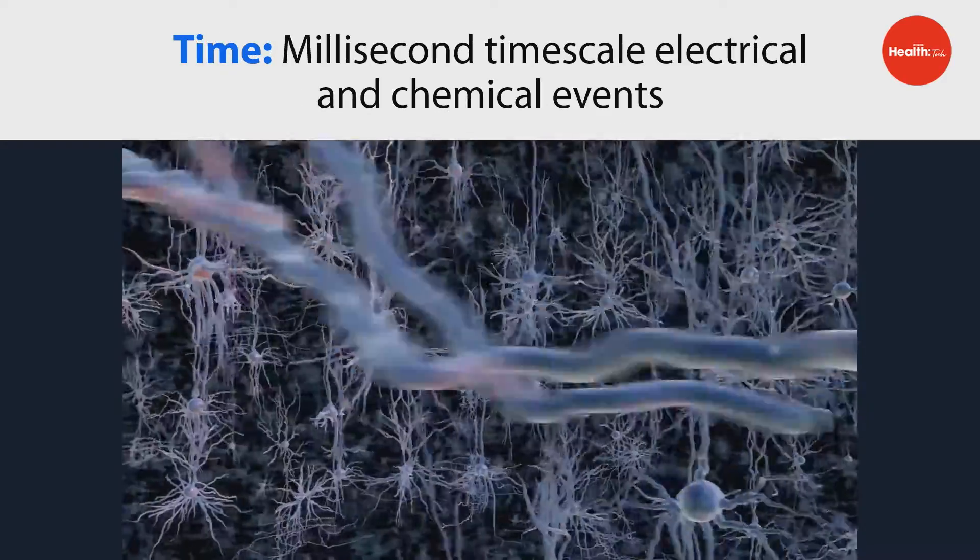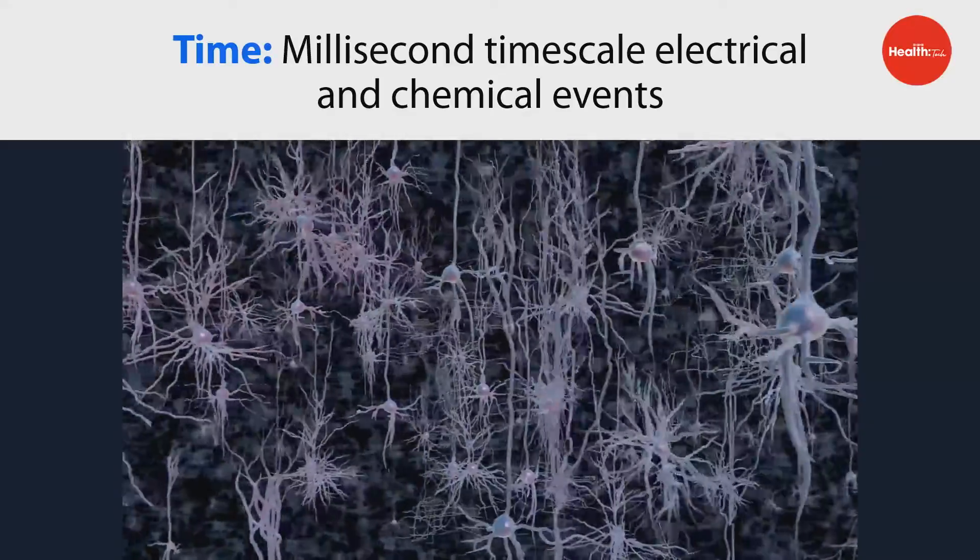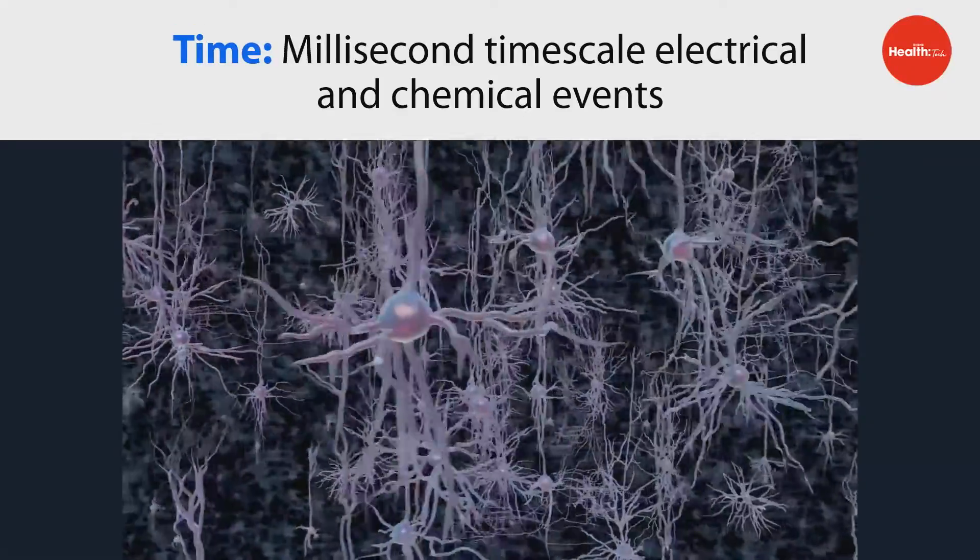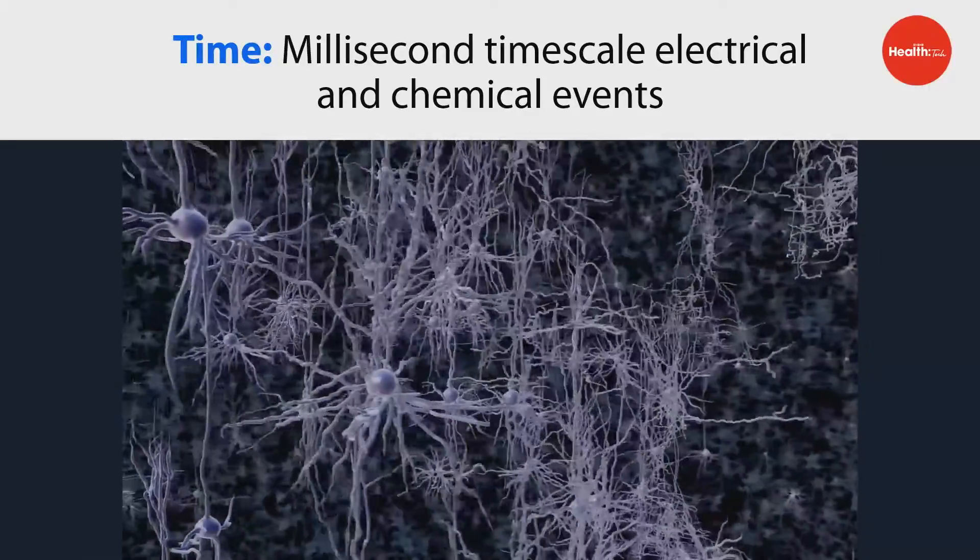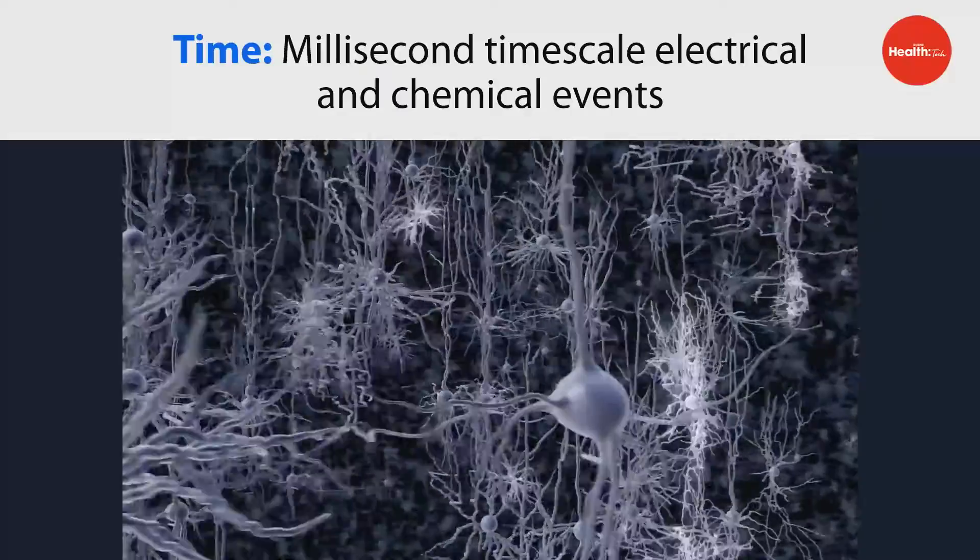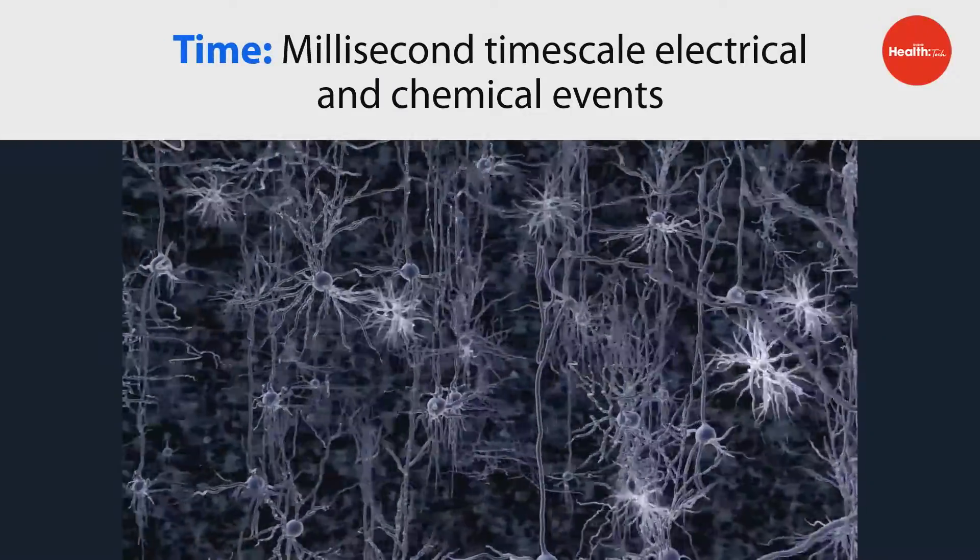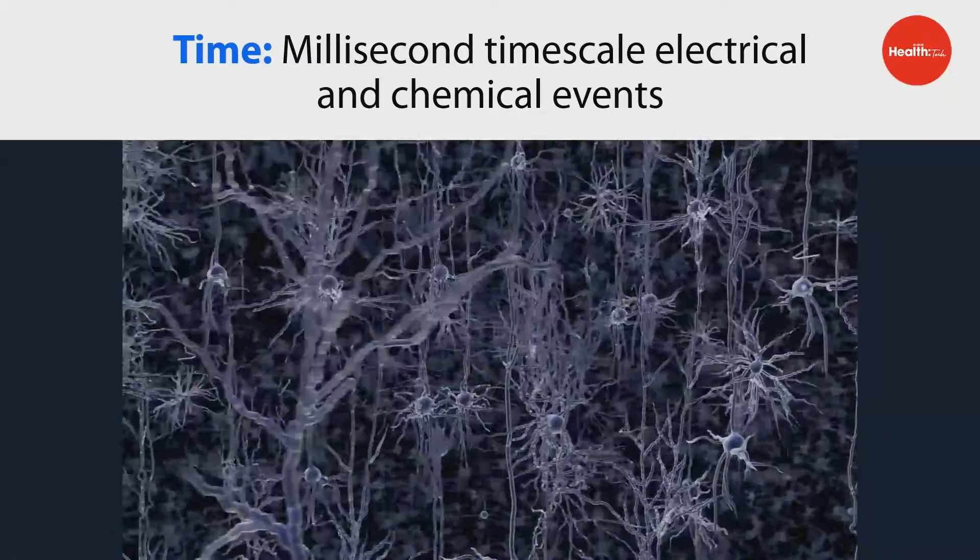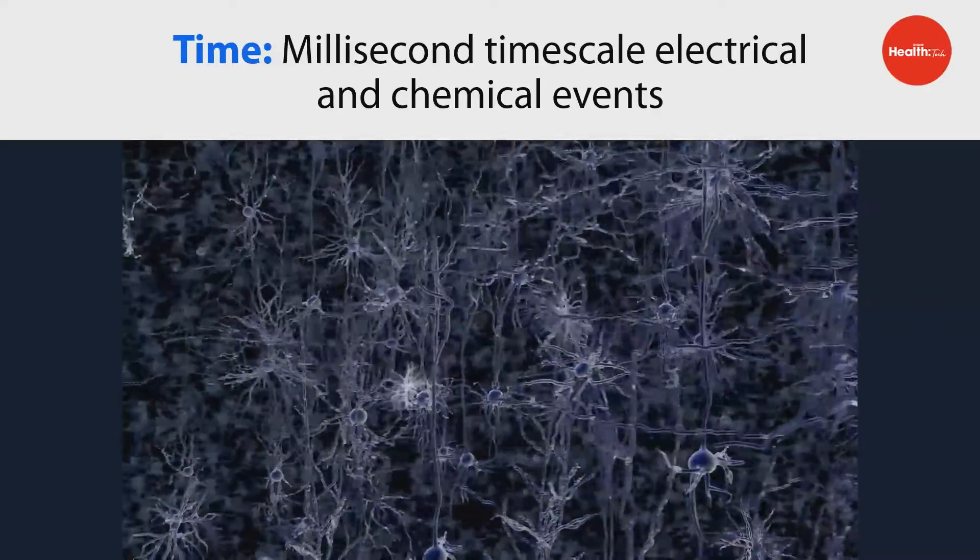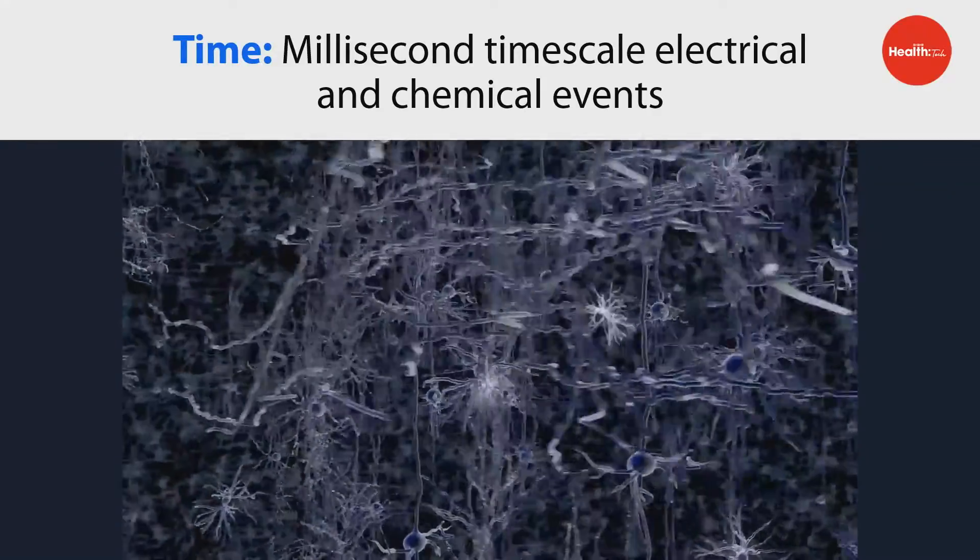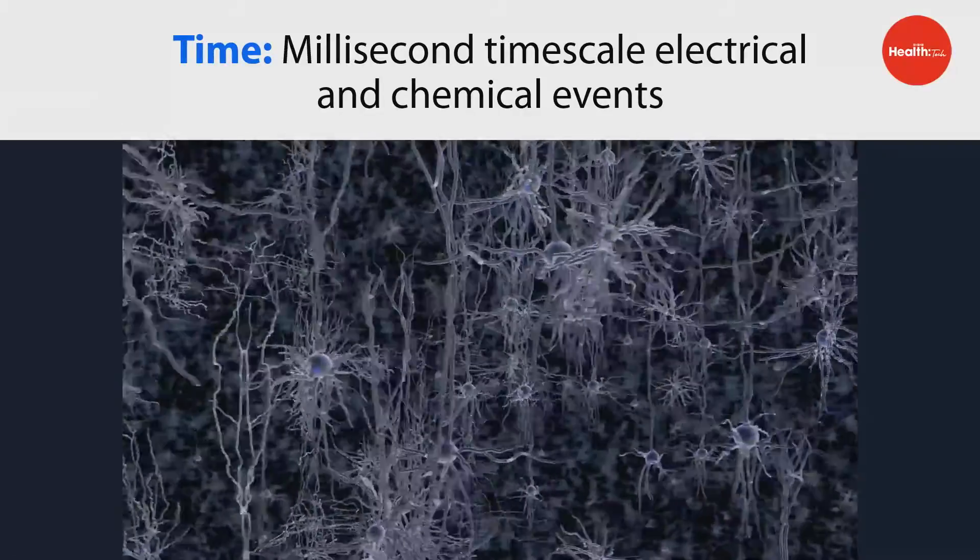But it's worse. The time dimension is also very challenging. If you want to understand aging or Alzheimer's, if you want to understand learning and memory development, you have to monitor the brain over months or even years. But the building blocks of brain computation, electrical pulses generated by brain cells are very brief, only a thousandth of a second long. So how can you cross those temporal dimensions from millisecond to second to month to year? So I sometimes say that the group's goal is to develop tools to help us cross space and time.